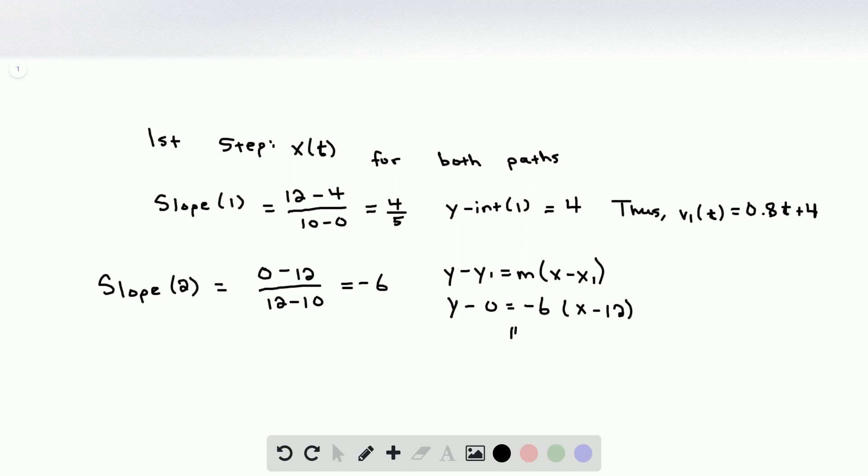So this simplifies to v2 of t, substituting in v2 for y and t for x, equals negative 6t plus 72.